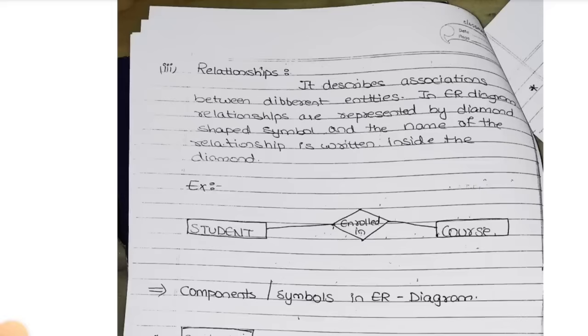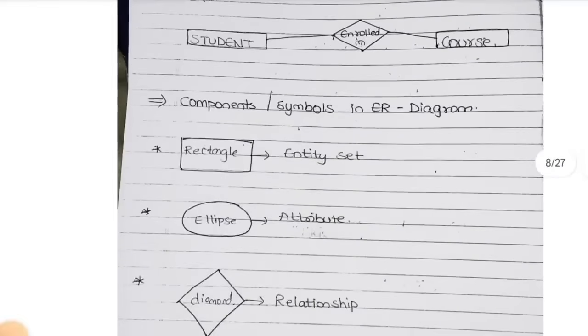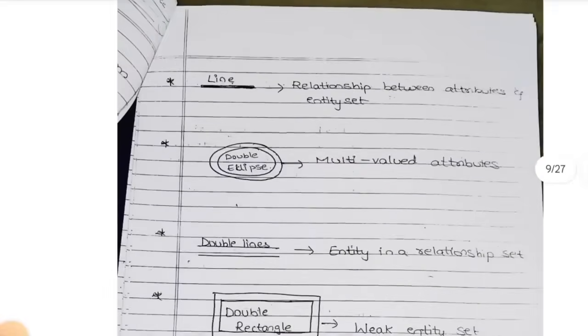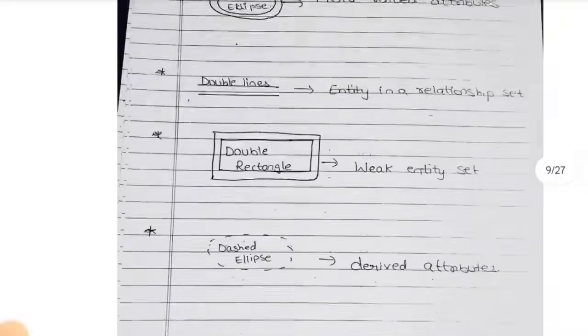The ER model uses different components and symbols. A rectangle represents an entity set. An ellipse or oval shape represents attributes. A diamond shape represents a relationship. Lines connect the elements. Double ellipse, double lines, and double rectangle are also different types of symbols used in ER diagrams. For Unit 1, the important topics are: ER model, DBA, and 3-level architecture.